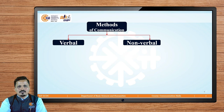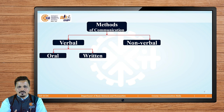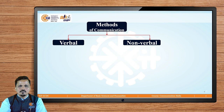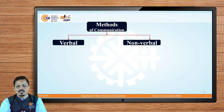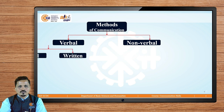Broadly speaking, there are two types. Communication takes place either in a verbal way or in a non-verbal way. Verbal communication includes oral and written communication, whereas non-verbal communication includes various parts. In simple terms, verbal communication is the communication with the help of words, and non-verbal communication is the communication without the help of any words, but with the help of signs, signals, symbols, graphs, charts, and so on.